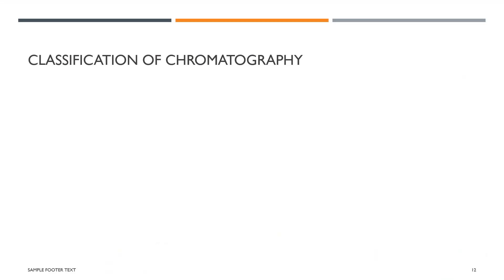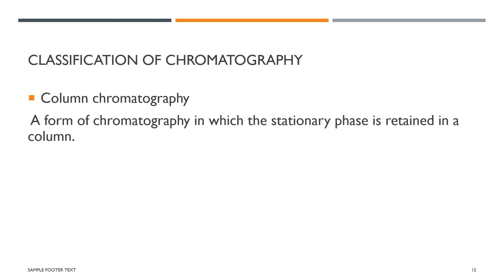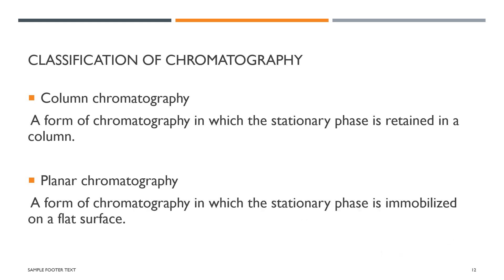A broader classification of chromatography includes column and planar types. In column chromatography, the stationary phase is retained in the column, whereas in planar chromatography, the stationary phase is immobilized on a flat surface.